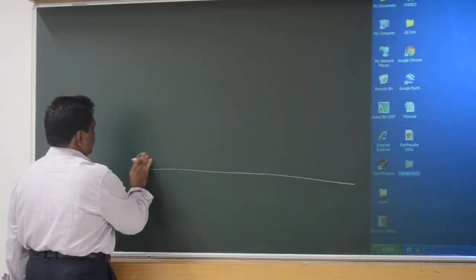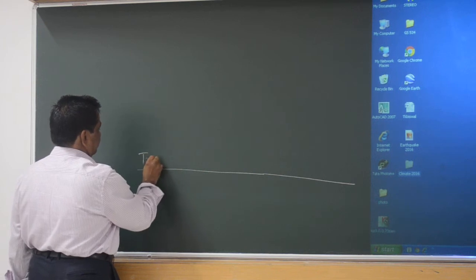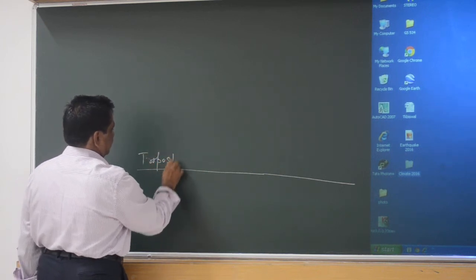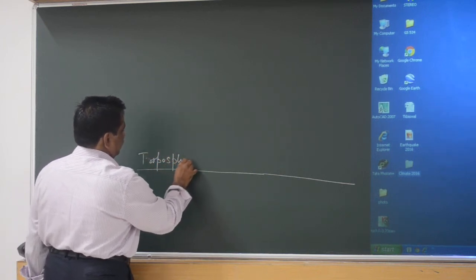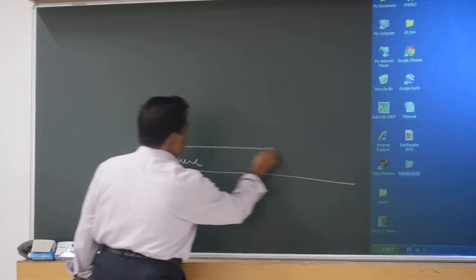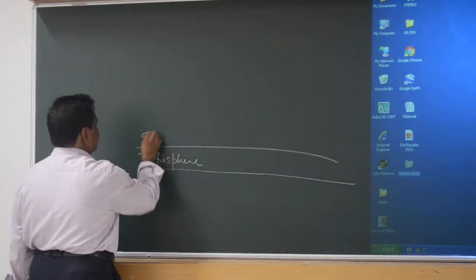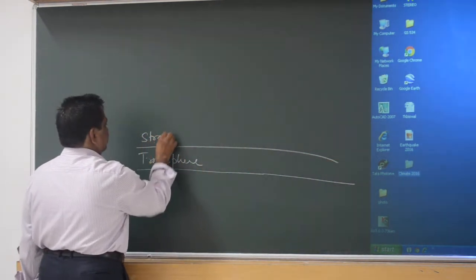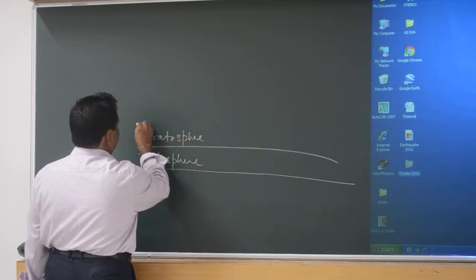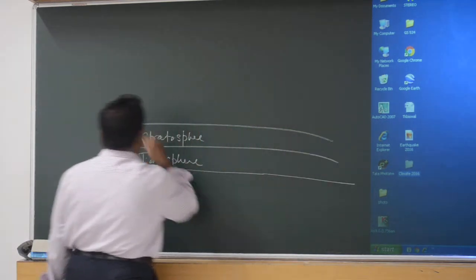Stratum, Troposphere, Stratum, Troposphere, Stratum, Troposphere, Stratum, Troposphere. Then Vesosphere — these are the names of the atmospheric layers being introduced.